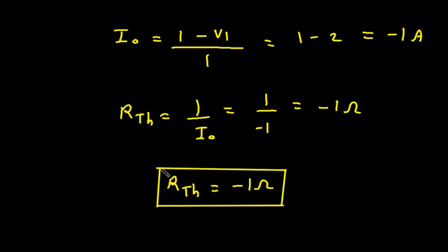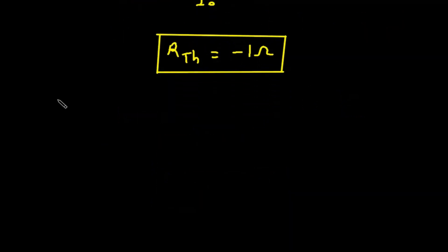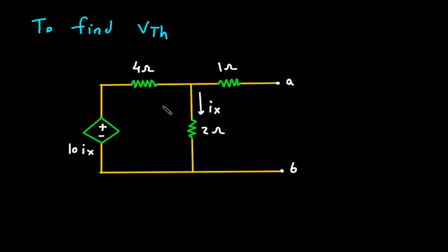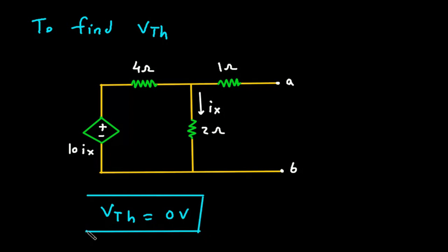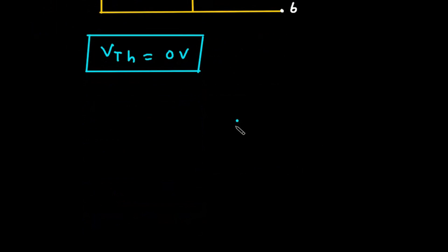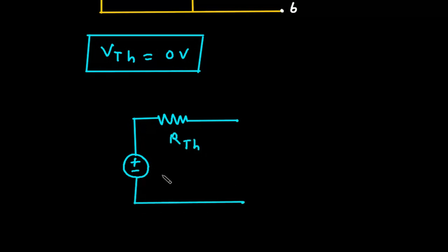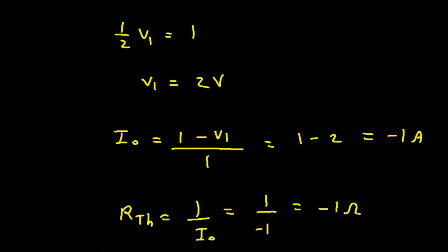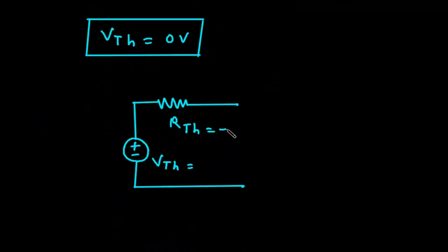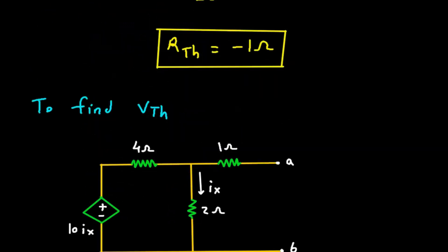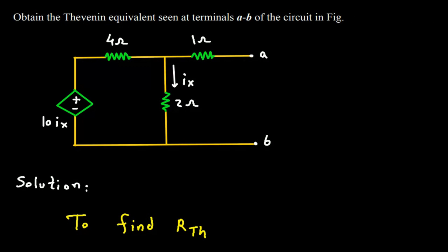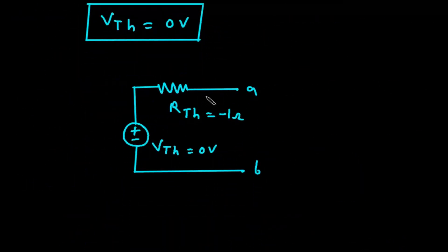Next we have to find VTH to get the Thevenin equivalent circuit. Here we can see that there is no independent source, so VTH will be equal to 0 volt. The Thevenin equivalent circuit has RTH in series with VTH, where RTH equals minus 1 Ohm and VTH equals 0 volt. This is the Thevenin equivalent at terminal A and B.